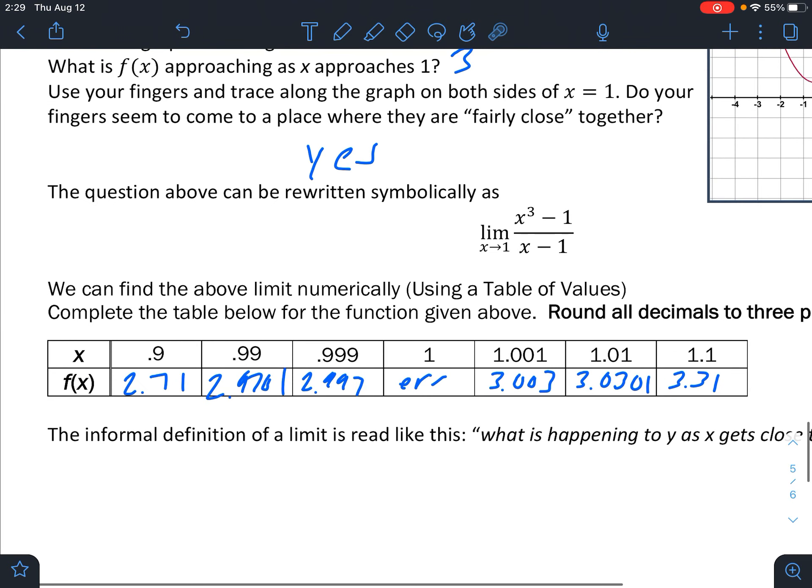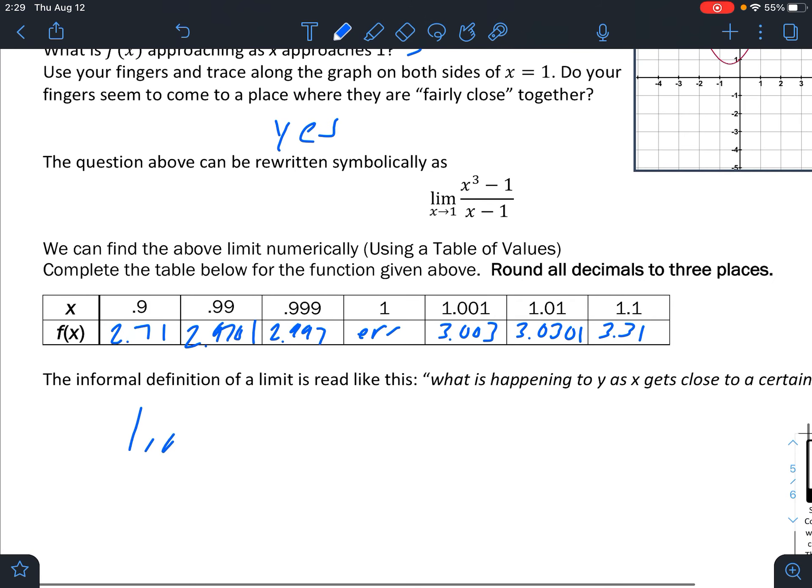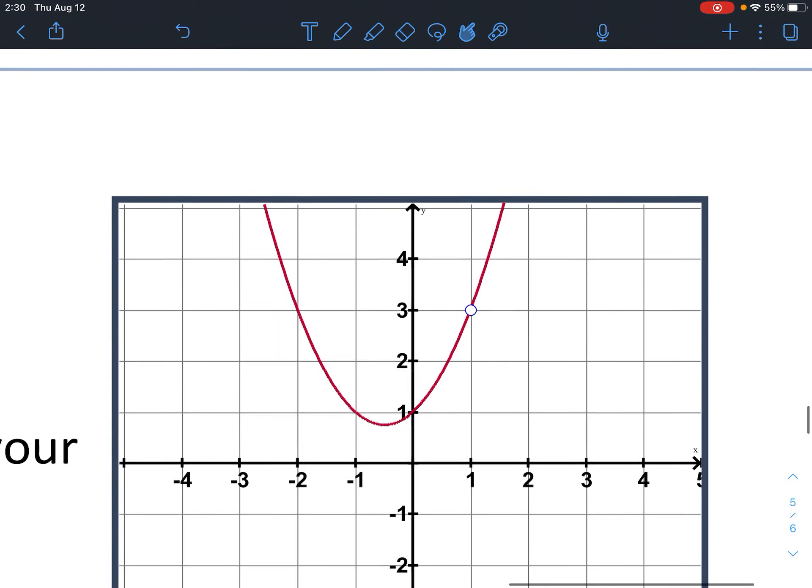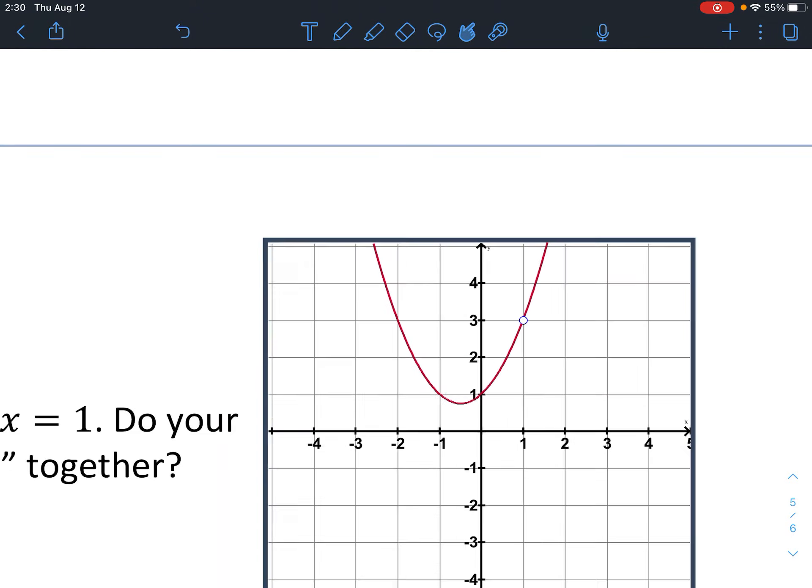So it looks like as this side approaches 1, we're getting closer to 3. As this side approaches 1, we're getting closer to 3. So we can pretty much say that our limit as x approaches 1 of this function here is 3. That's our best estimate for what that would be. And look at the graph. That backs us up there. It looks like they're approaching 3 from both sides.